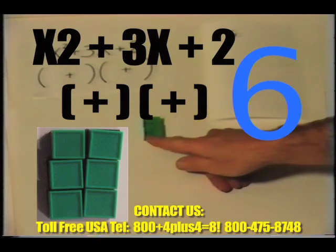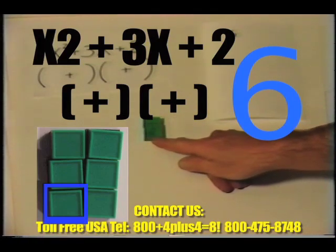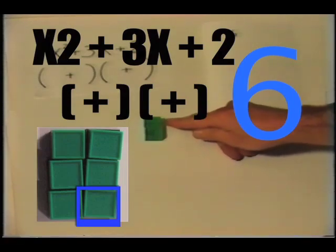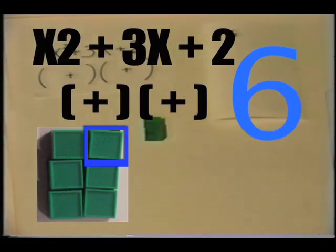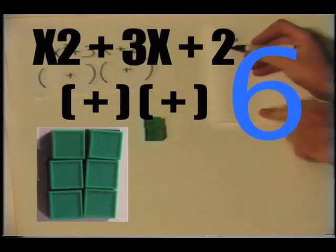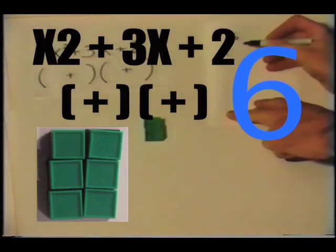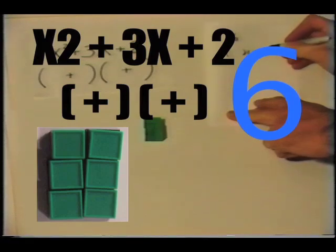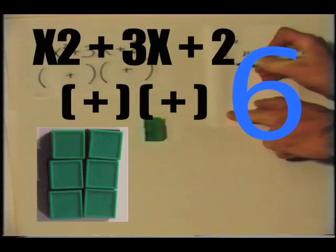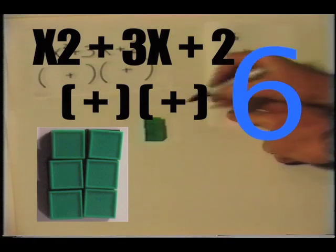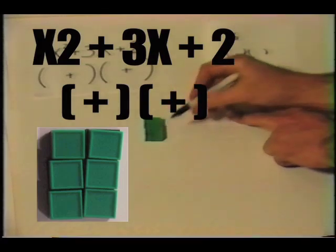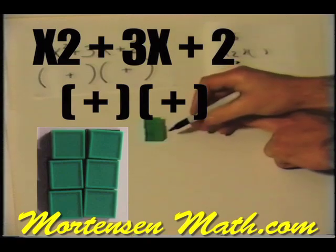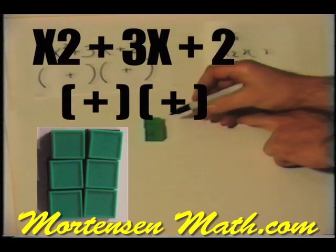The over amount is one, two. The up amount is one, two, three. We will write down our factors. Our over amount, we draw an arrow over, is one, two. Our up amount is one, two, three.